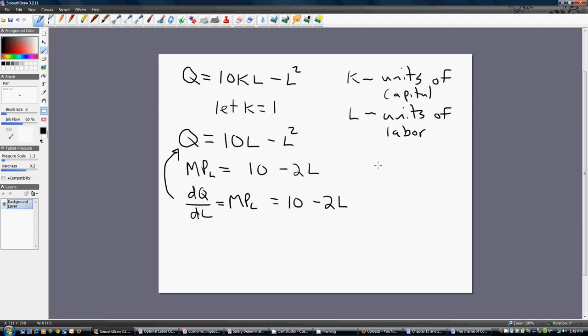All right, a few other things that we're going to need in order to solve this problem. You'll be given the price of the product that this firm sells its output for, and let's call that $10. And the wage at which the firm hires labor, and we'll set that equal to $20.